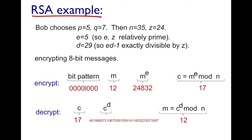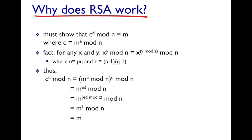Let's now see why this modular arithmetic is correct. Encryption computes c = m^e mod n, and decryption computes c^d mod n, hoping to recover m. We use the formula: x^y mod n = x^(y mod z) mod n.